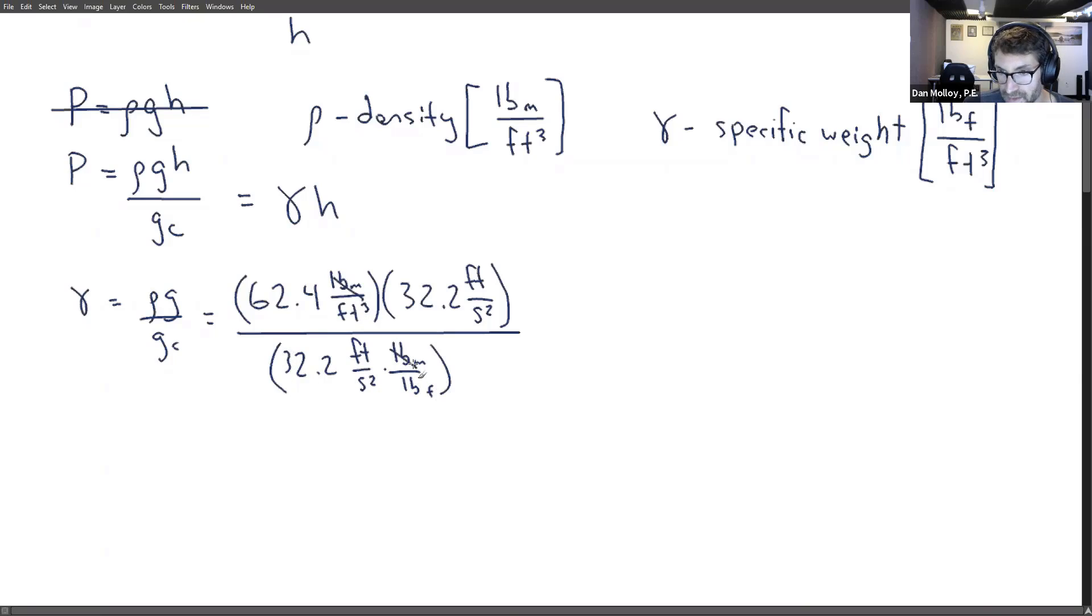And G sub C is 32.2 feet per second squared times pound mass over pound force. So we lose pound mass. We lose feet per second squared. So pound force over cubic feet. That's what we want. And the number is, of course, still 62.4, no change in the magnitude.